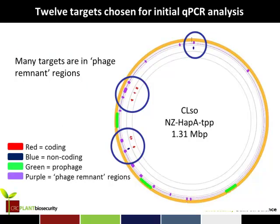Finally, we boiled it down to 12 targets, and many of these targets are what we're referring to as phage remnant regions. These are regions where the annotation and other clues are telling us that a prophage has excised, or a phage has jumped into the genome and then jumped out again and left part of itself behind. They're scattered throughout the genome, these phage remnants, but most of the regions we identified using this process are associated with phage remnants.